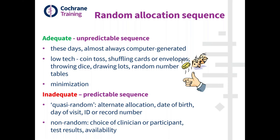The general feature of adequate methods of randomisation is that they produce an unpredictable sequence. Inadequate methods of randomisation produce a predictable sequence, and the main problem is that because they are predictable, they are difficult to conceal, meaning all of the problems related to lack of allocation concealment may be present.